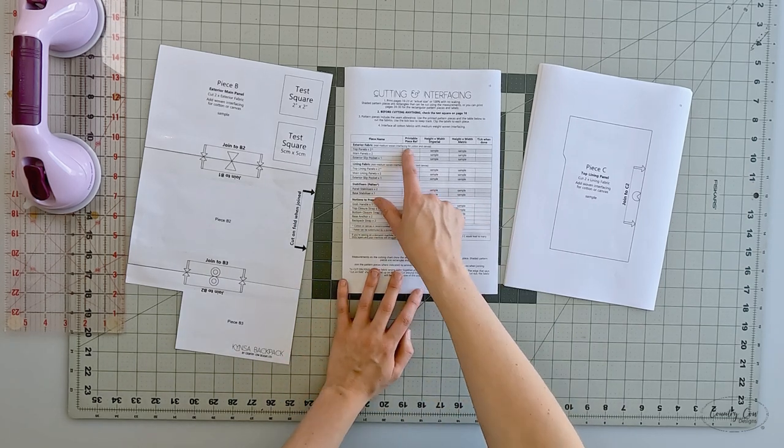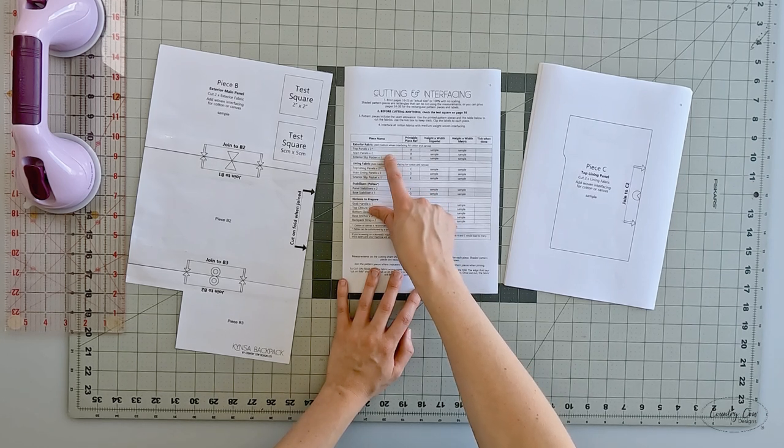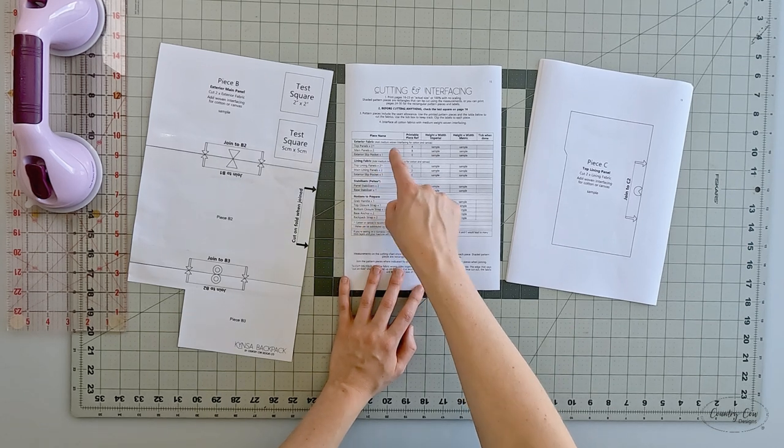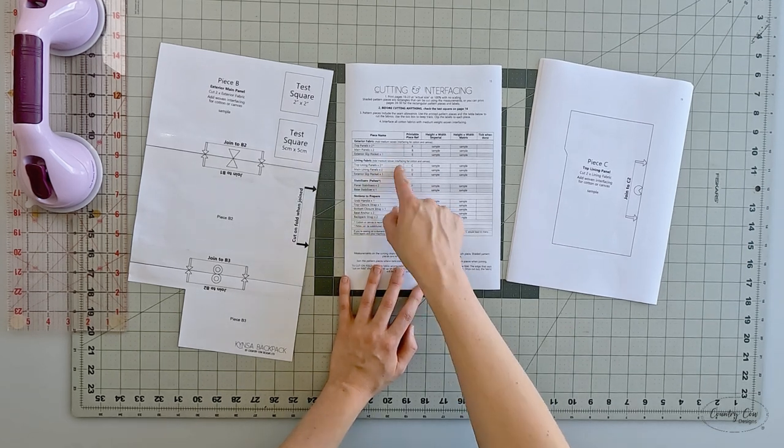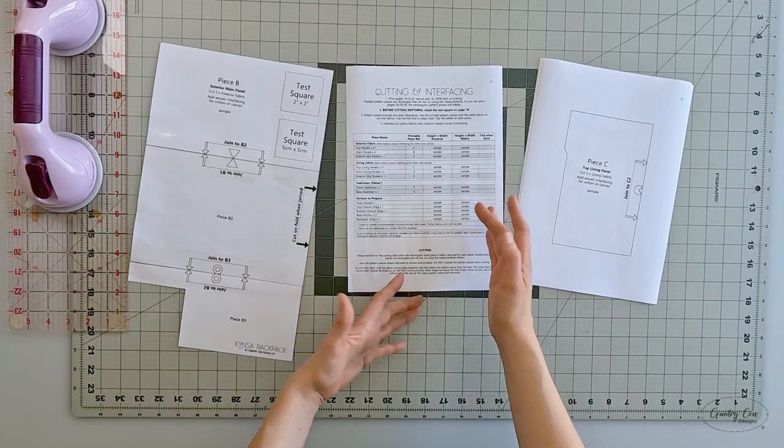It's also great if you want to plan fabrics. If I'm thinking, yeah, I want to make this out of cork and I want to make this out of my cotton fabric and I want to make this out of waterproof canvas, then I can write down what I'm planning before I cut and I can make sure that I'm not duplicating pieces or cutting the wrong bit out by mistake. So it's just great for planning out your bag before you make it.